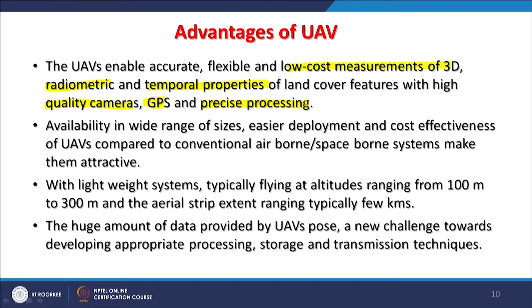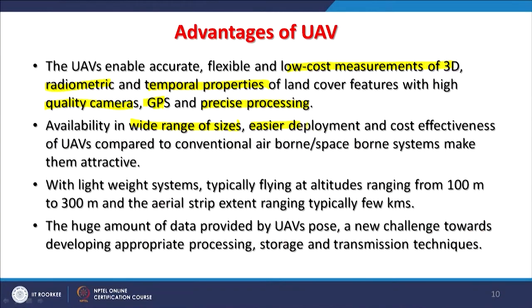Another advantage with UAVs is that they are available in a wide range of sizes and shapes, with varying numbers of rotating motors — maybe 4, 6, or 10 — depending on the purpose and how much stability is required. Their deployment is very easy, and cost effectiveness is definitely better compared to conventional airborne or spaceborne systems. That is why these are becoming more popular and attractive for covering small areas. But if one would like to cover a large area, UAVs are not fit for that kind of task.